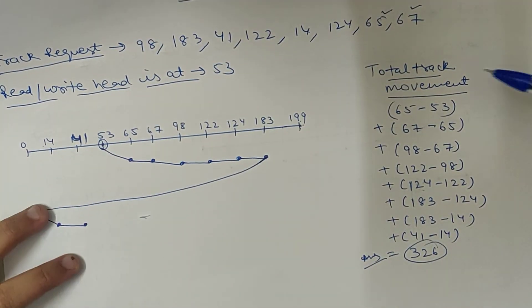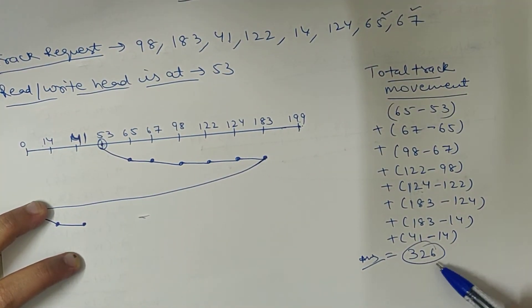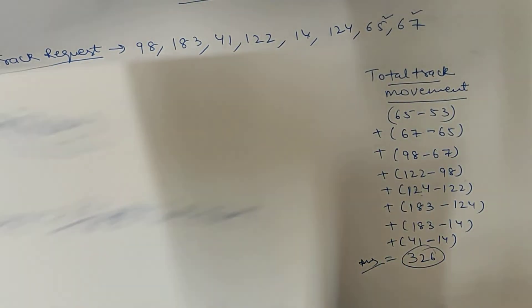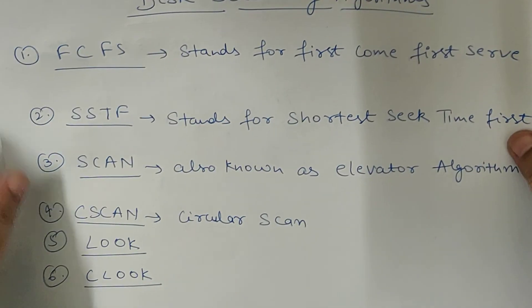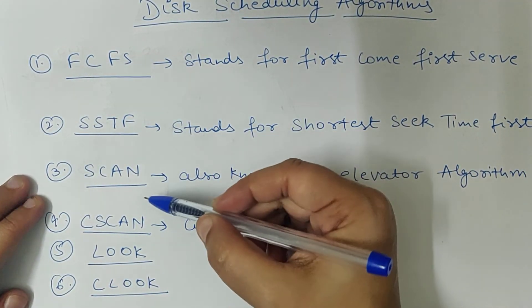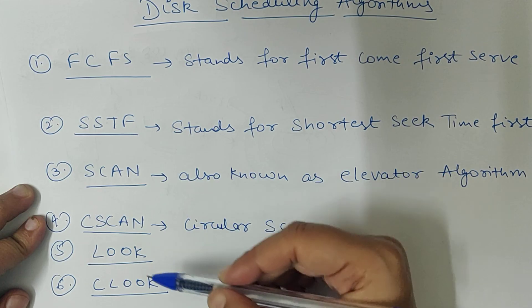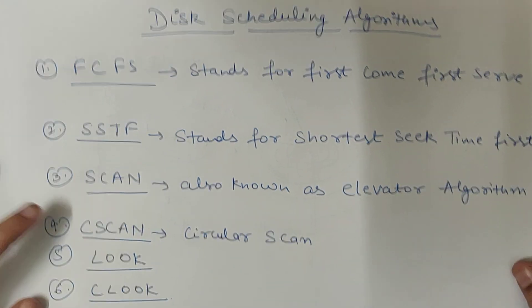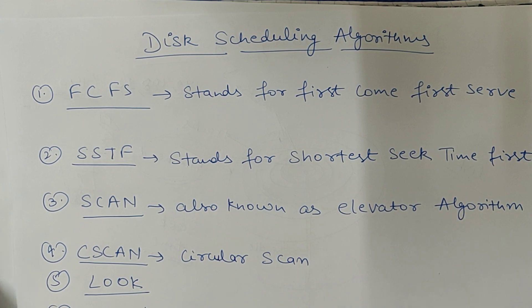So this is the total track movement. The answer is 326. So these are the 6 disk scheduling algorithms: FCFS, SSTF, SCAN, CSCAN, LOOK, and CLOOK. I hope you understand all the disk scheduling algorithms. Thanks for watching my video, thank you so much everyone.